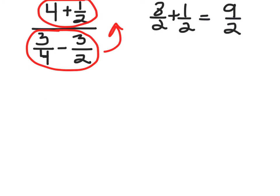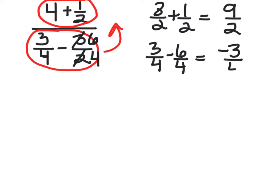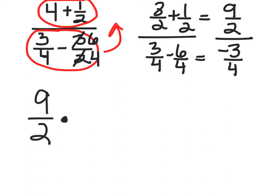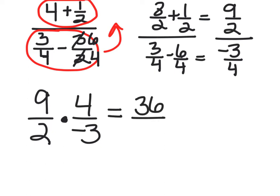For the denominator, we change 3 halves to have a common denominator of 4, so 6 fourths. 3 fourths minus 6 fourths is negative 3 fourths. So we have 9 halves divided by negative 3 fourths. We've simplified both, now we flip and multiply — multiply by the reciprocal of the denominator. 9 times 4 is 36, 2 times negative 3 is negative 6, and 36 divided by negative 6 is negative 6.